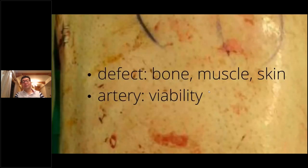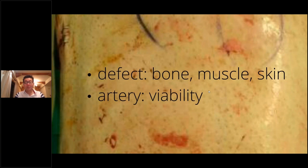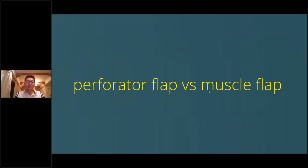So what did you look at and what did you see when you evaluated the defect? I looked at what's missing — the bone was missing, the muscle was missing, and part of the skin was missing. And also we looked at the artery, which was only the posterior tibial artery was viable.